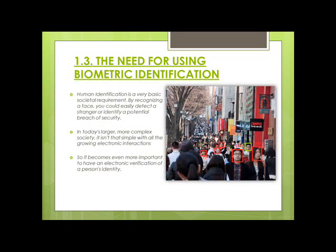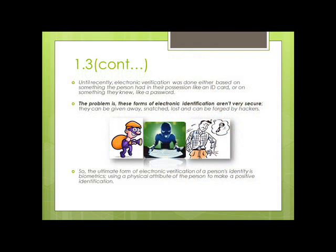Next comes the need for biometric identification. Human identification is a very basic societal requirement — by recognizing a face, you could easily detect a stranger or identify a potential security breach. In today's larger, more complex society with growing electronic interactions, it becomes even more important to have electronic verification of a person's identity. Until recently, electronic verification was done based on something the person had, like an ID card, or something they knew, like a password. But these forms of identification are not very secure — they can be given away, snatched, lost, or forged by hackers.